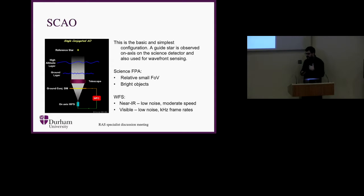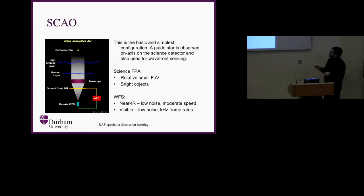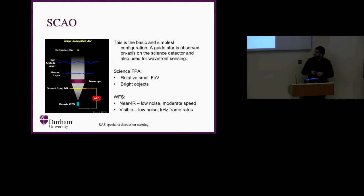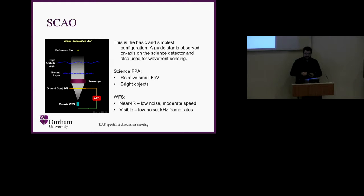These were somewhat demanding on first-generation focal plane arrays, but nowadays you can get a large number of focal plane arrays that would satisfy the requirements for this type of observation. For the wavefront sensor, there are two regimes: infrared wavefront sensing or visible wavefront sensing. Both need low noise and moderate speed in the IR, but as we saw with MAVIS, we're talking about needing kilohertz frame rates to push the wavefront sensing down into the visible.